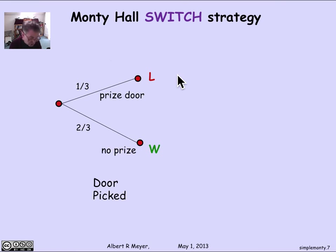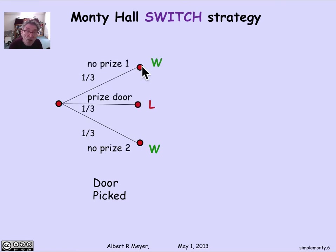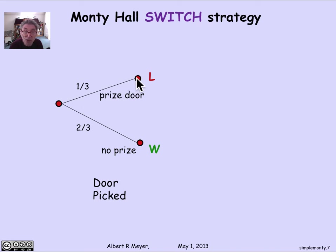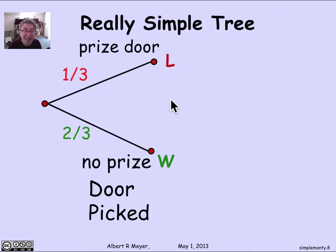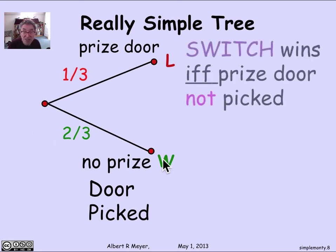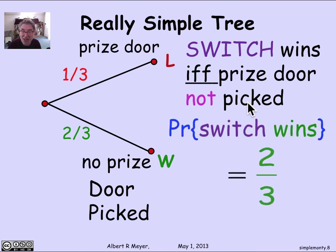We can go further, because there's no point distinguishing between picking no-prize door one or no-prize door two — you win in both cases. We could have condensed the entire tree down to one where either you pick the prize door with probability one-third, in which case you're guaranteed to lose no matter what happens, or you pick a non-prize door with probability two-thirds, in which case you win no matter what happens. That is a really simple tree. With the switch strategy, the probability of winning is two-thirds — the switch wins if and only if the prize door is not picked.